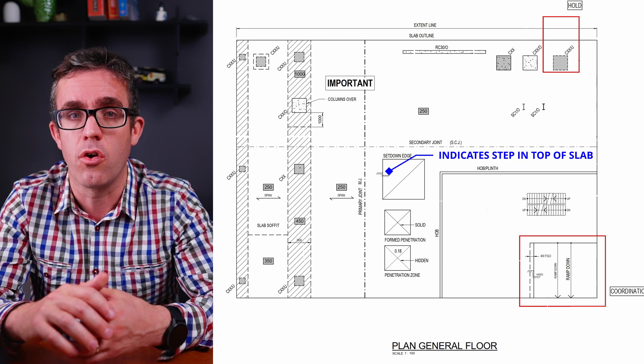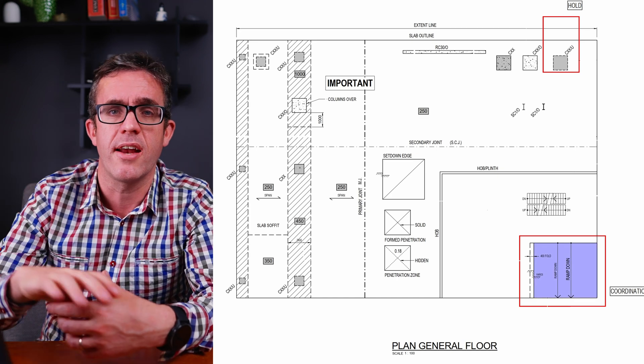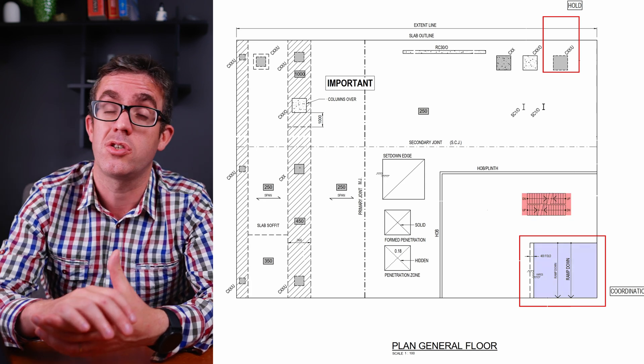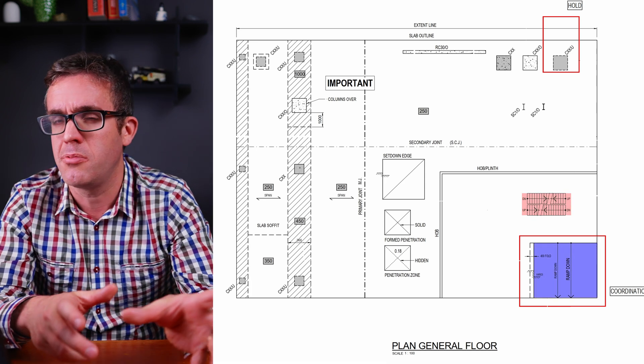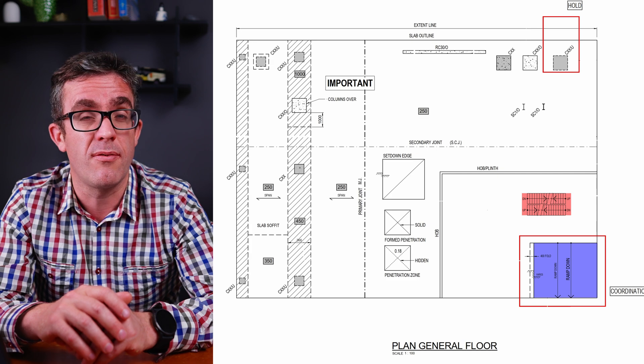In Australia, depth changes for set-downs are typically left to the architect rather than called up by the engineer — contrast this with the UK, where engineers provide that set-out for more control over construction. In Australia, we show a minimum depth of the slab but won't call up the actual physical step height. It's also important to show ramps, and stairs are shown with any additional starter bars or items required, as they can also put additional load on the structure.